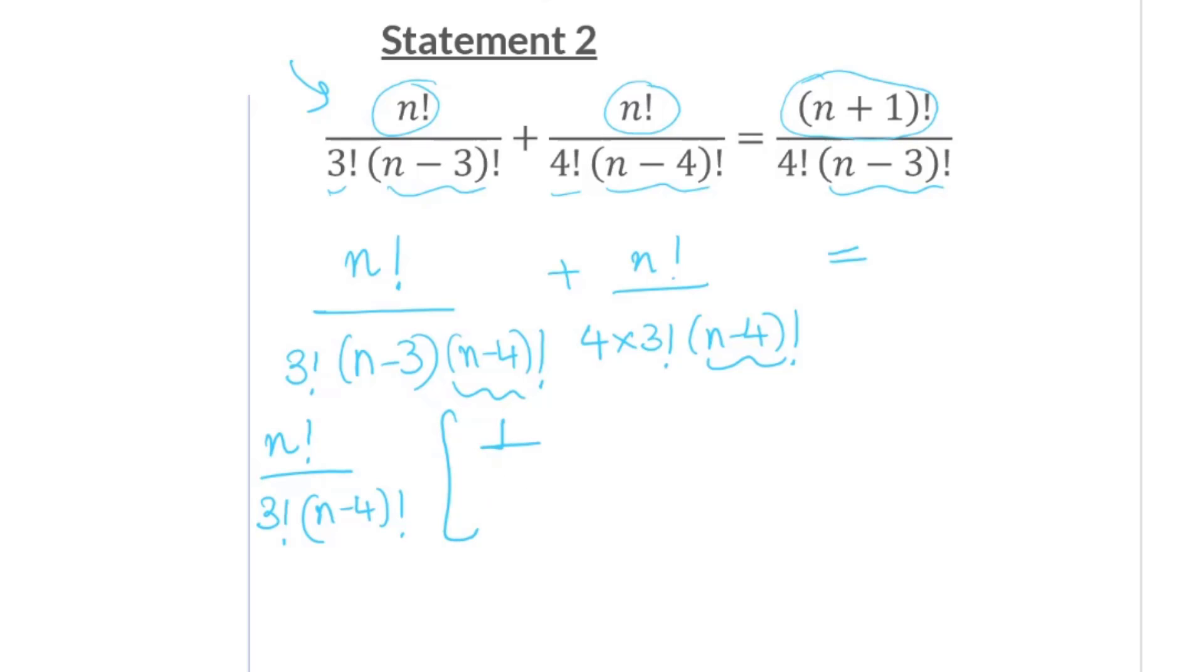What are you left with? In the first term, you have N minus 3. In the second term, you have 1 over 4. Now, what we can do is we can leave this as is.